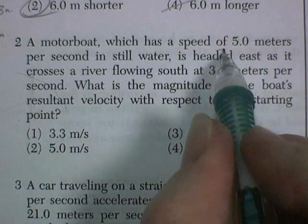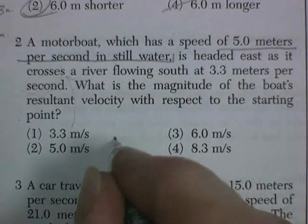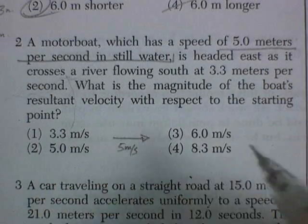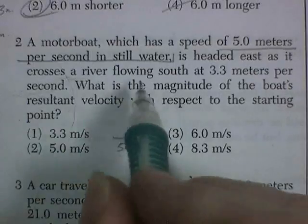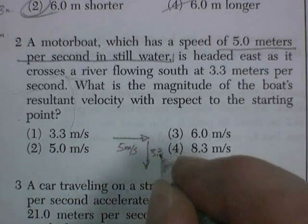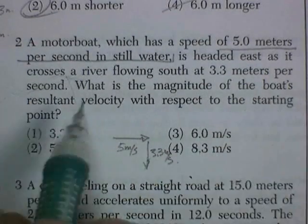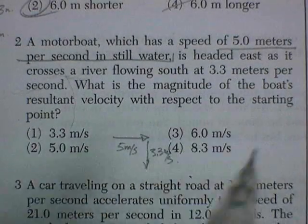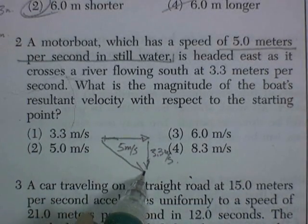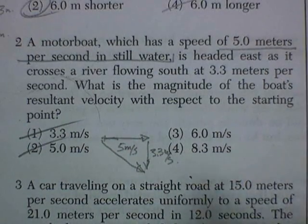Okay, a motorboat, which has a speed of 5 meters per second in still water, is heading east. So it's going east, 5 meters per second. The river is flowing south at 3.3 meters per second. What would be the magnitude of the boat's resultant velocity with respect to the starting point? So here's its actual velocity. It's going to be more than 3.3. It's going to be more than 5. But look at this.